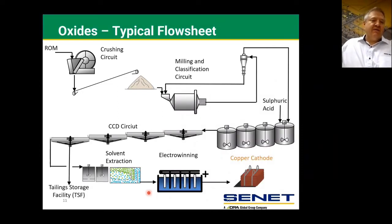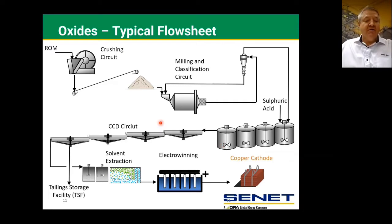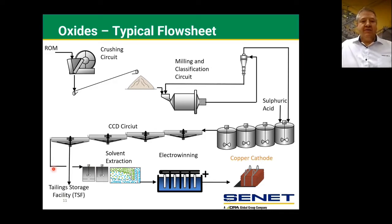For oxide, the ore is crushed and sent to a milling circuit as well. However, there's no need for flotation — it's sent directly to leaching with sulfuric acid. The leached slurry is sent to a CCD circuit where the copper is washed out of the ore. The underflow from the CCD circuit is sent to a TSF while the overflow goes to solvent extraction where it's purified, then electrowinning to produce copper cathode.